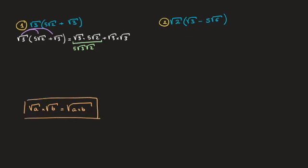Using that result we can go back to our expression and state that it's equal to 5 times the square root of 3 times 2, plus the square root of 3 times 3, and that becomes 5 times the square root of 6 plus the square root of 9.